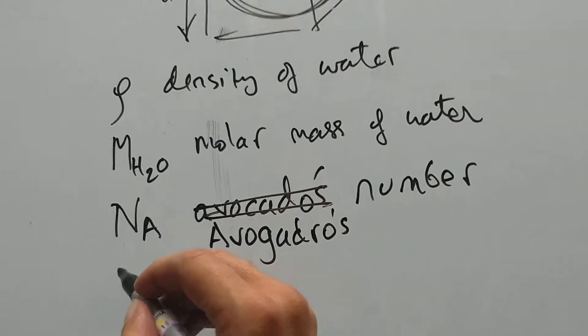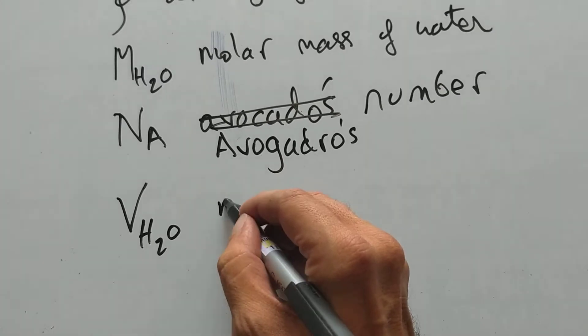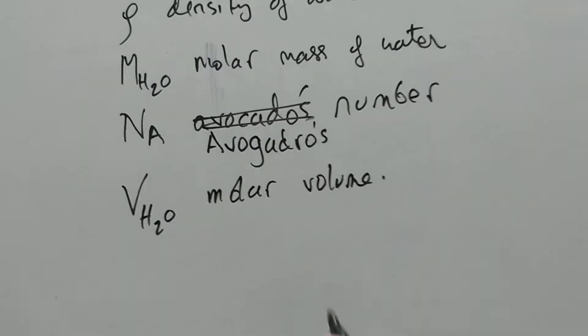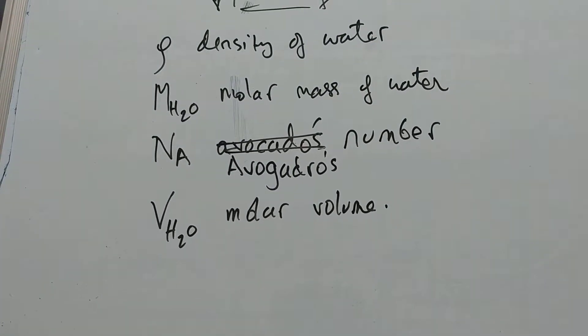One more quantity which we're going to build from the other ones is VH2O. This is the molar volume. This is the amount of volume of one mole of water.